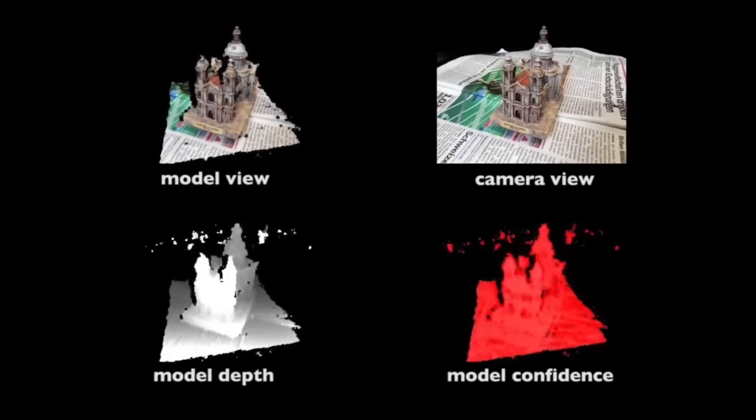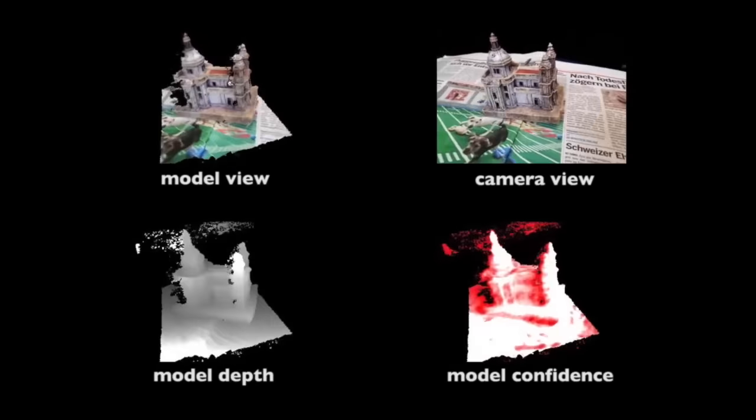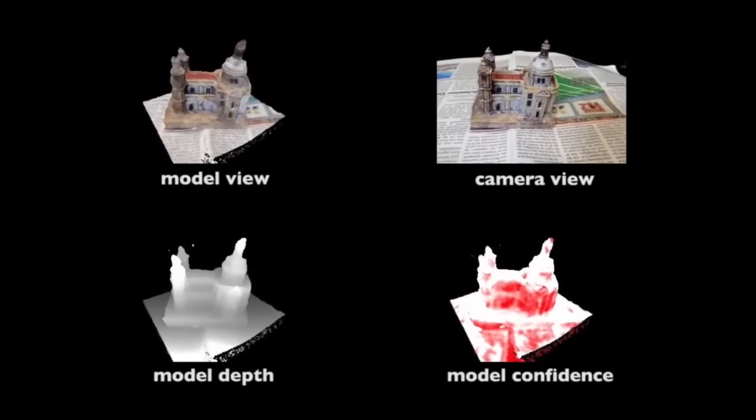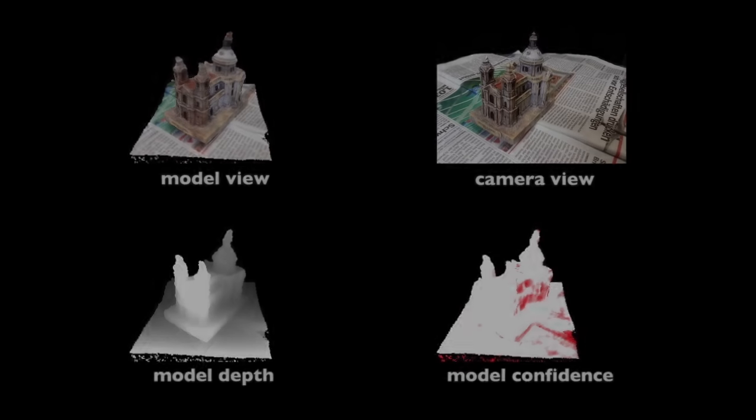We show our method working with an existing dataset used to compare to the state-of-the-art system from CVPR 2014. Our system is incrementally built in real time and the detailed surface geometry is refined over time. Our system performs dense camera tracking, stereo matching, volumetric fusion, and surface extraction at 25 Hz.